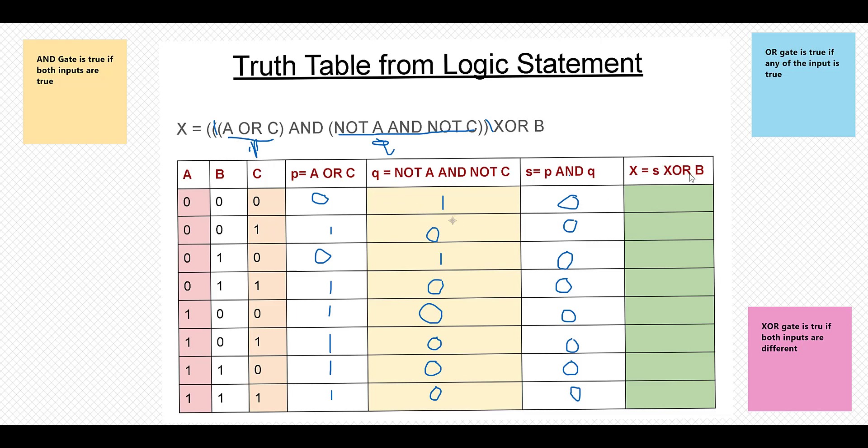Next is s XOR b. So s is all 0, and XOR gate is true if both inputs are different. It means whenever b is 1, XOR gate will be true. So b is 1 at these two points, and b is 1 here and here. So b is 1 here and here. All others are 0s.